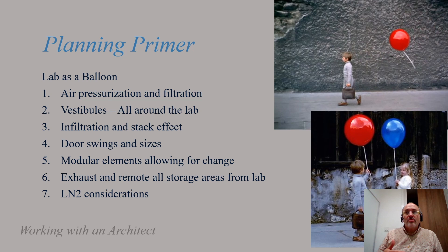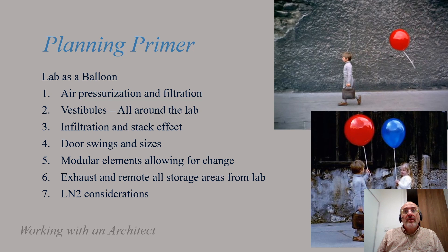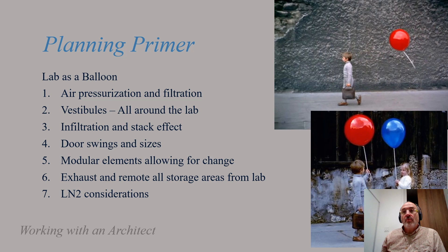Use modular elements as much as possible to allow for future change, particularly as automated procedures increasingly take over lab space. One key issue is making sure you exhaust all spaces around the laboratory that contain materials, and run a cycle that allows out-gassing in a heated environment over a week before materials are brought into the laboratory. Liquid nitrogen is one of the dirtiest elements — keeping it separate in its own space, tracking the LN2 flow, is a critical part of your planning.